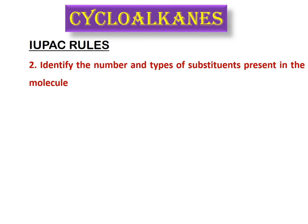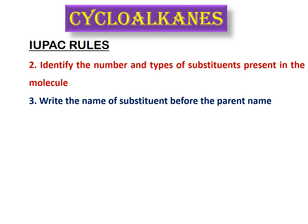These rings may also be substituted. If we have one or more substituents on the ring, we must identify the number and types of substituents before naming the molecule. The next rule is to write the name of the substituent before the parent name. For a monosubstituted ring, you don't need to number the carbon atoms — the substituted carbon is always carbon number one by default.